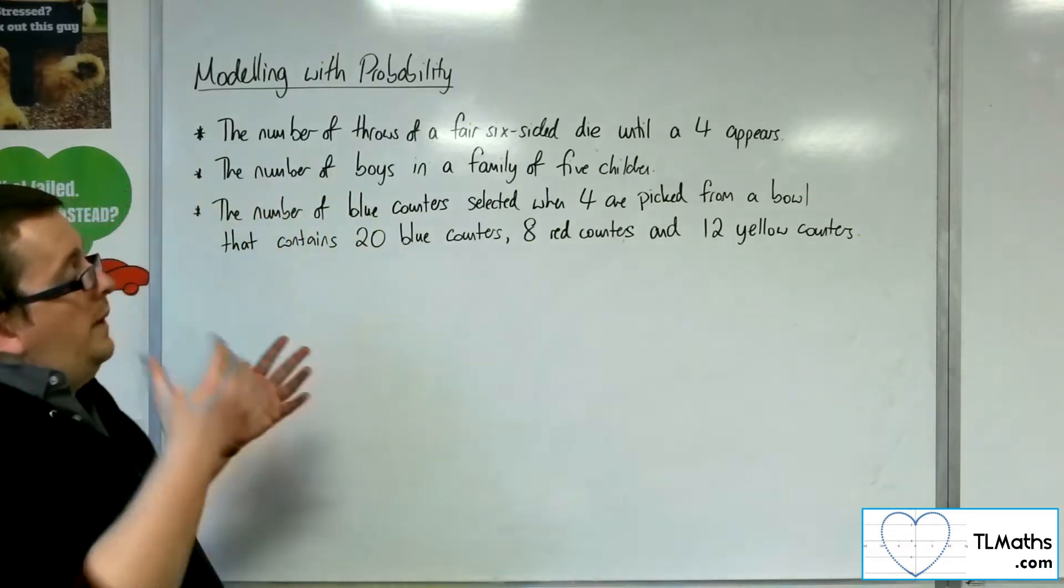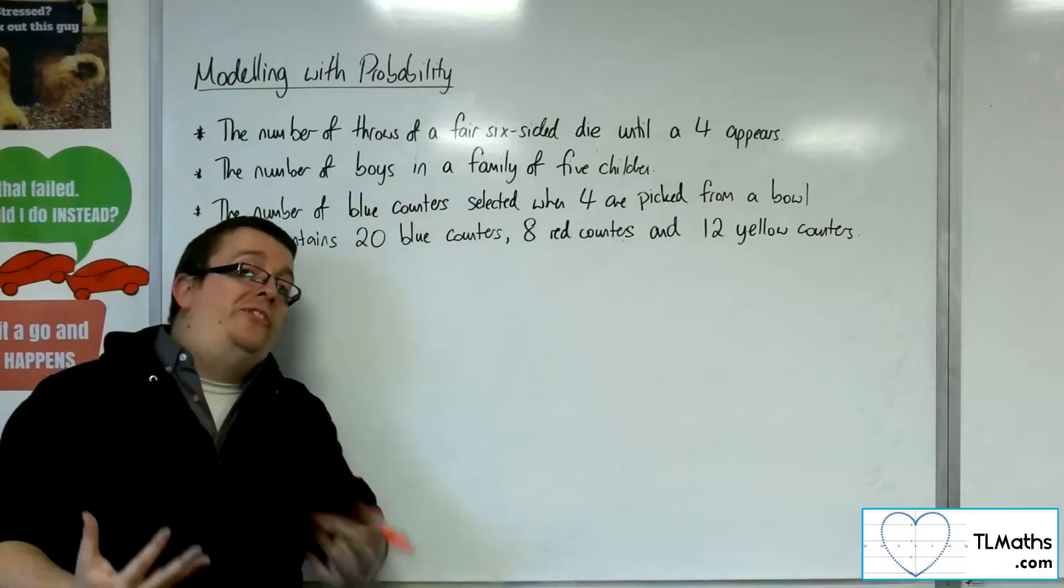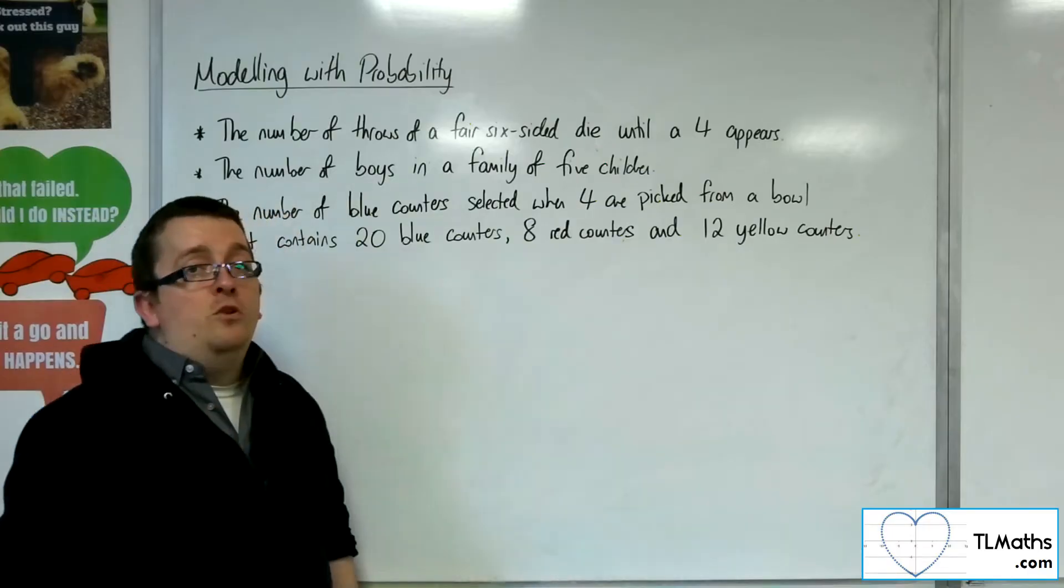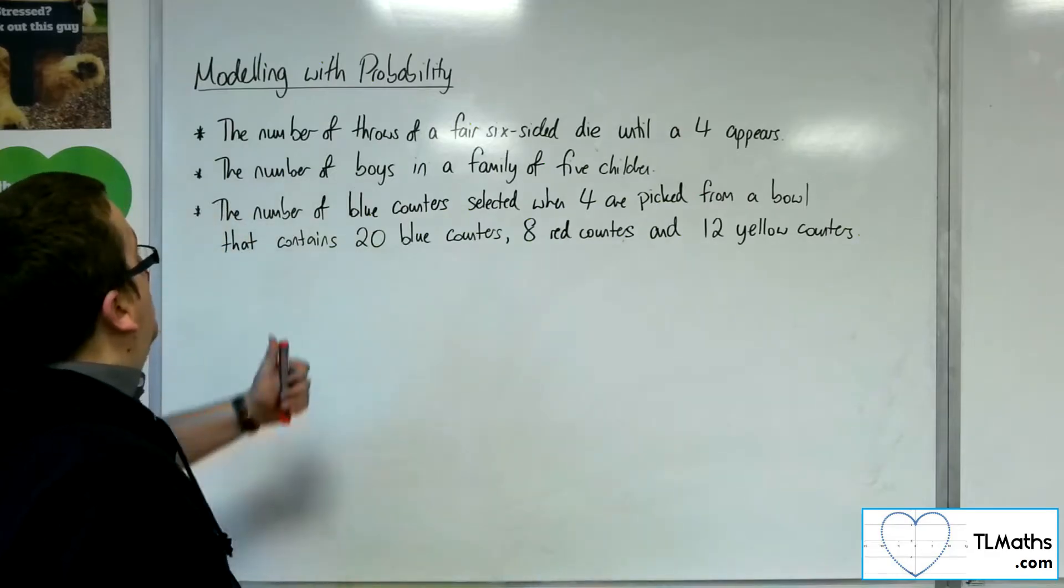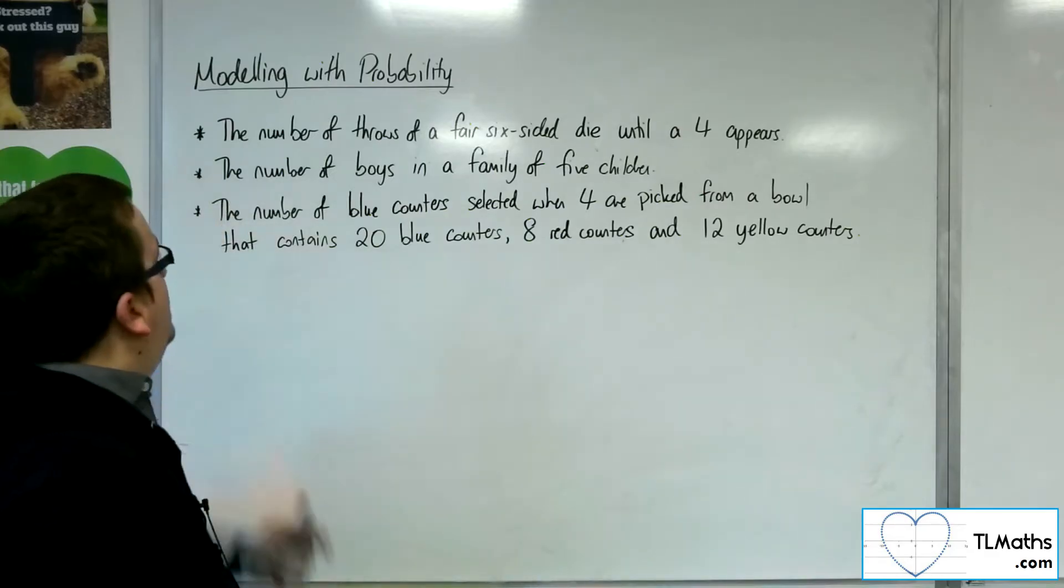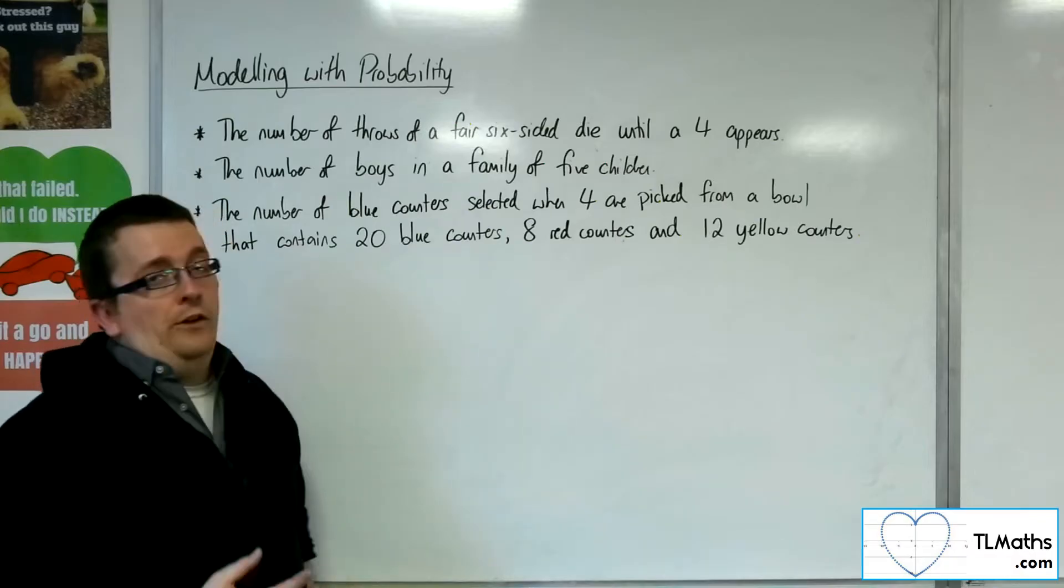So we're going to look at these three situations. We're going to assess whether a binomial model would suit it or not. This first one, the number of throws of a fair six-sided die until a four appears.